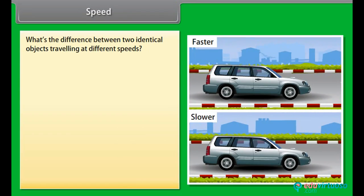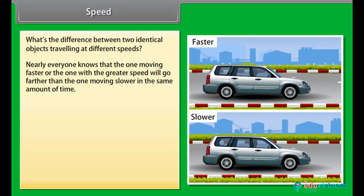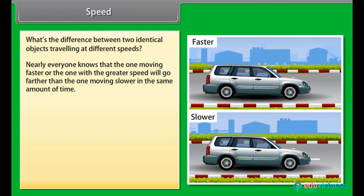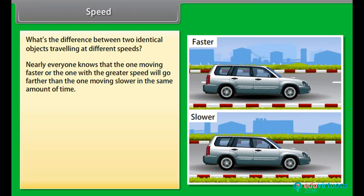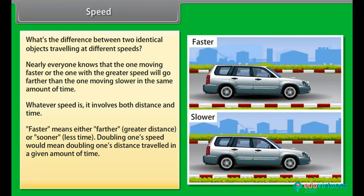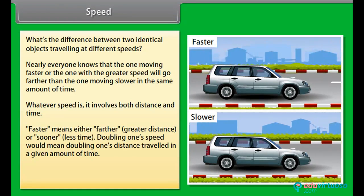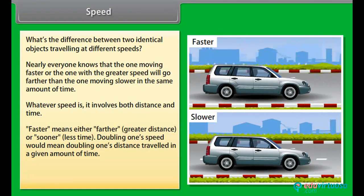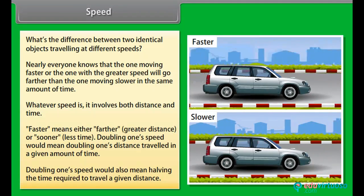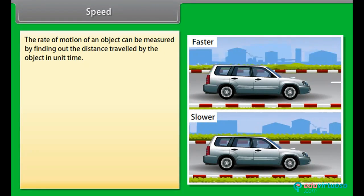Speed. Can you tell the difference between two identical objects traveling at different speeds? Nearly everyone knows that the one moving faster — the one with greater speed — will go farther than the one moving slower in the same amount of time. Speed involves both distance and time. Faster means either farther distance or sooner — less time. Doubling one's speed would mean doubling the distance traveled in a given amount of time, or halving the time required to travel a given distance. The rate of motion of an object can be measured by finding the distance traveled by the object in unit time.